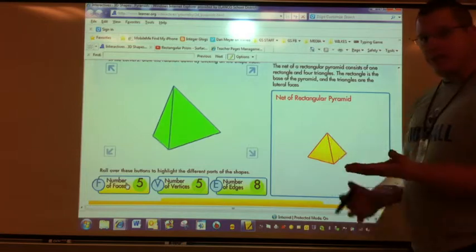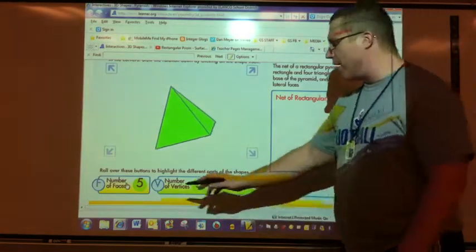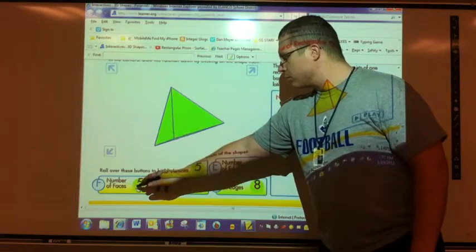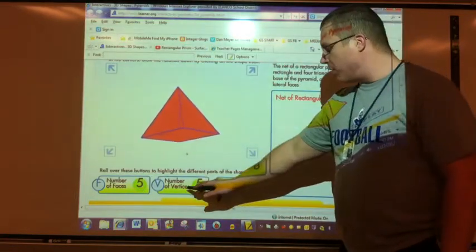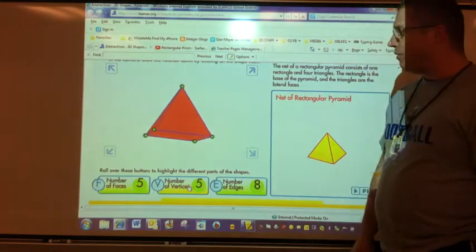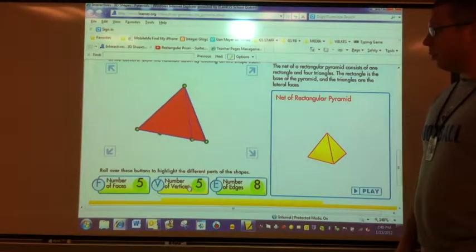You have four sides and the base, which is five. If I take a look at the vertices, click at those, there are five. Four on the bottom, one at the top.